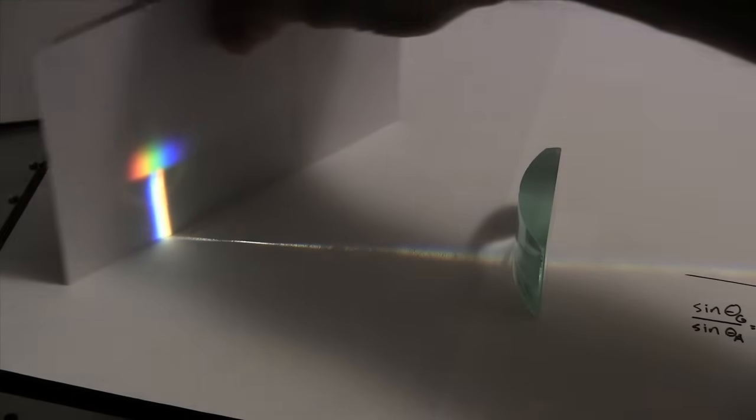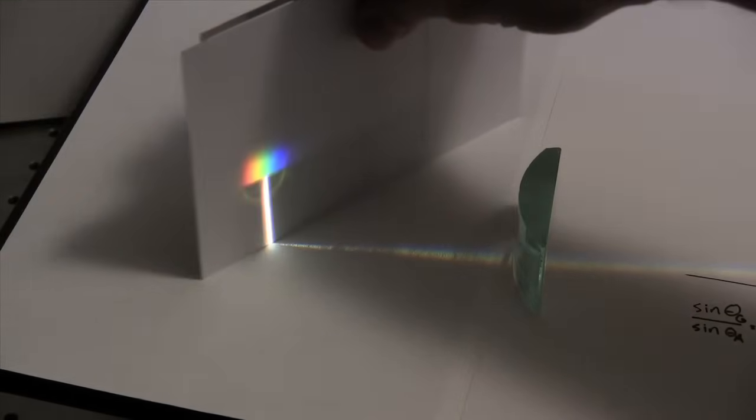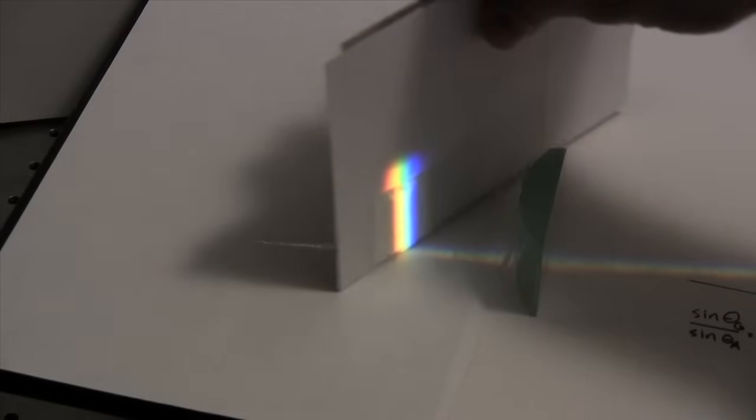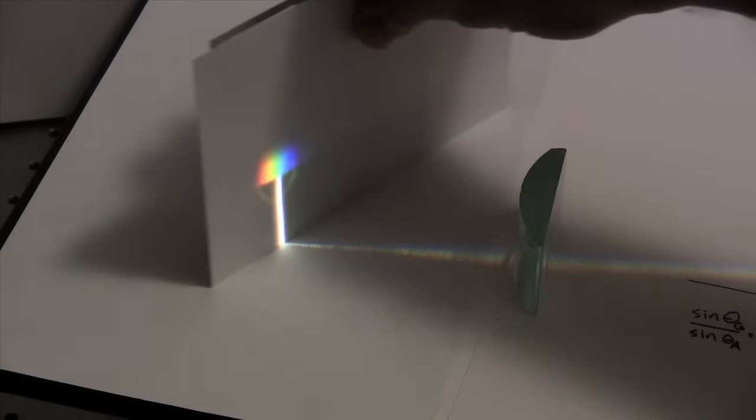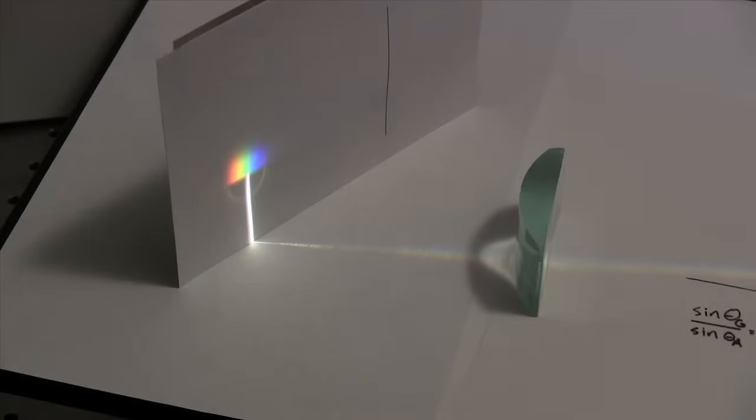As we move the screen in this experiment, there's nothing to cause this change of color that we're observing. The only thing that's changing is the overlap of the colors. So we can conclude that when we perceive this white light, what we're really seeing is a whole bunch of colors added together.